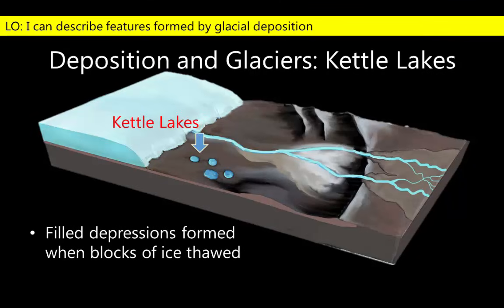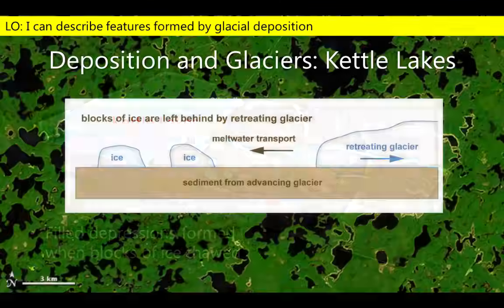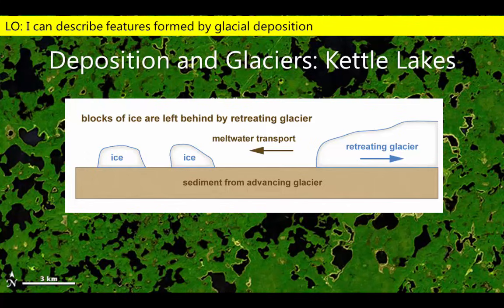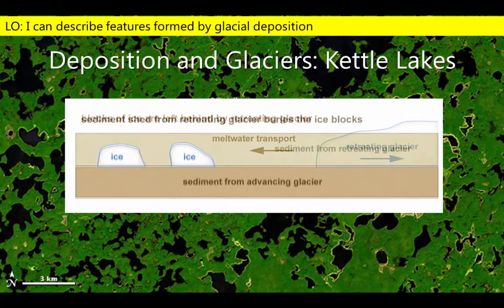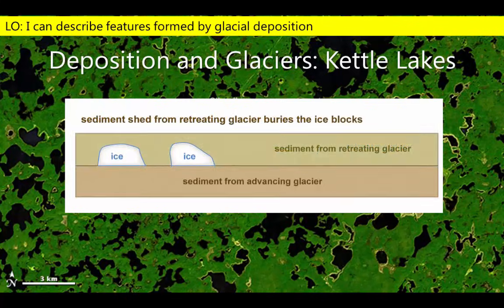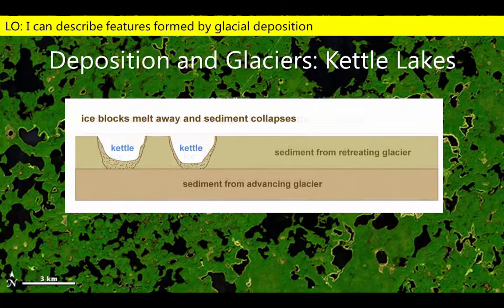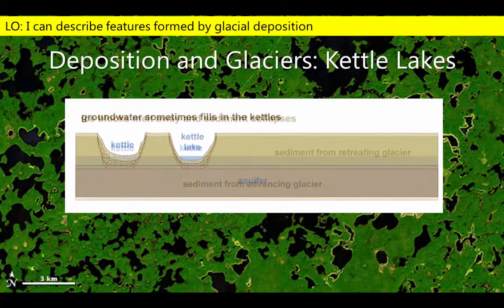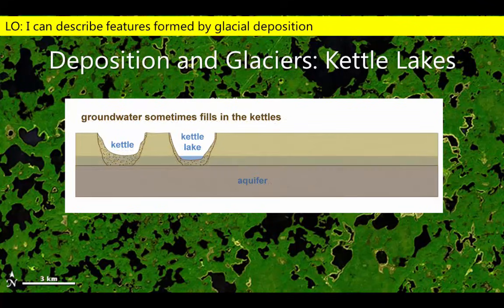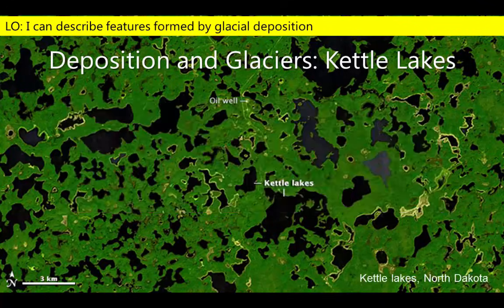Behind the moraines, we also find hundreds of small lakes known as kettle lakes. Kettle lakes form when blocks of ice break off a retreating glacier and are subsequently buried. The ice gradually melts, forming a depression in the glacial sediment known as a kettle. These low areas may then be partially filled to form a lake, just like these kettle lakes in North Dakota.